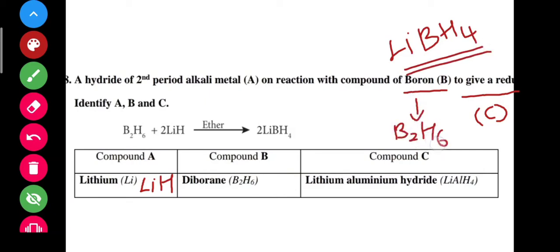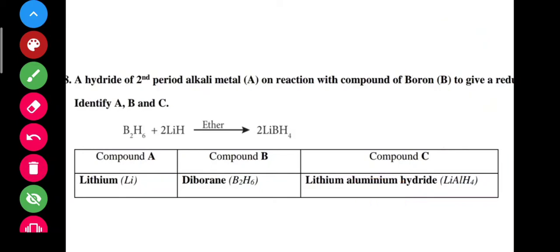Product B2 is identified. Lithium borohydride — there is some mistake in the PDF. Lithium borohydride is confirmed. Compound of boron B2H6 gives C = lithium borohydride. Diborane and lithium borohydride — also lithium aluminum hydride and lithium borohydride are noted.